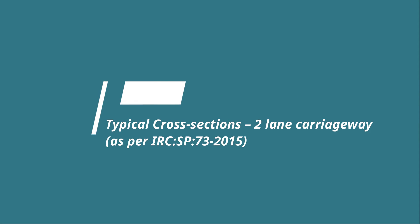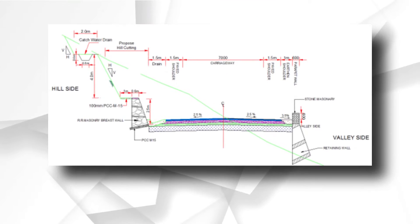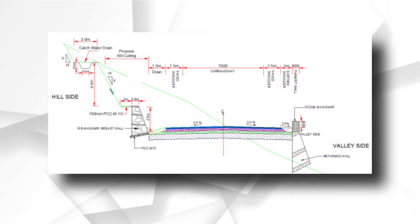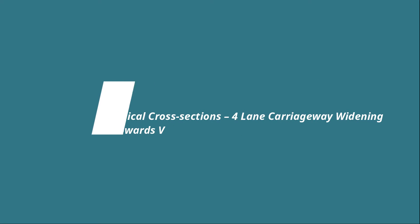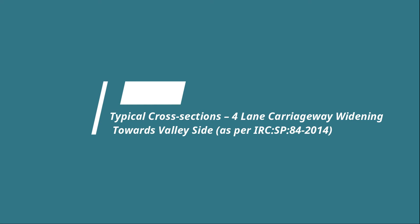Typical cross-sections include a two-lane carriageway as per IRC SP 73-2015, and a four-lane carriageway widening towards the valley side as per IRC SP 84-2014.